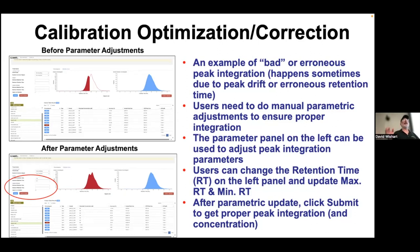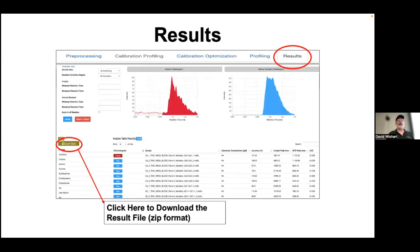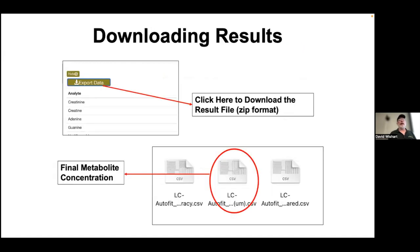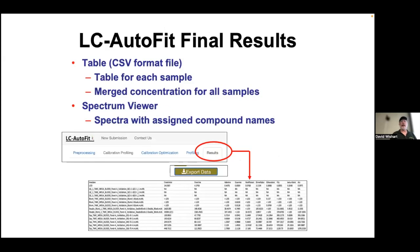These look at MRM pairs — the product ion, qualifier ion, parent ion, and retention times. To get the concentration you have to do the integration. Once you've finished any fixes, click on your results and download the results files in zip format. You'll find an LC file with your metabolite names and concentrations. LC AutoFit doesn't use J Spectral Viewer in the full way that GC AutoFit and NMR do, but the integration graphs use elements of J Spectral View.